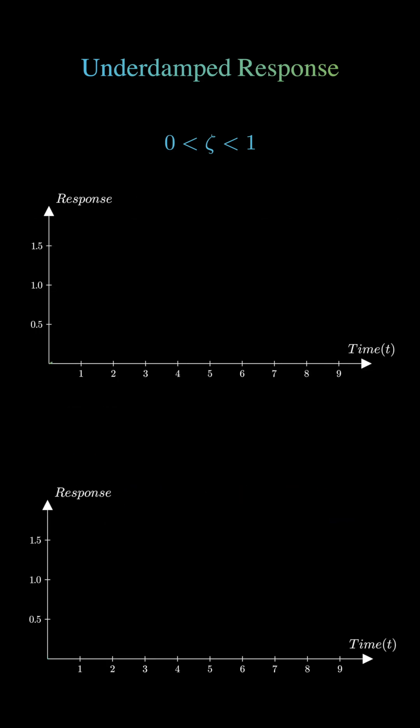For example, a system with zeta equal to 0.2 will oscillate much more than one with zeta equal to 0.5, but as zeta increases, these oscillations reduce faster.